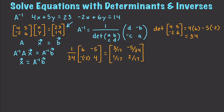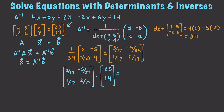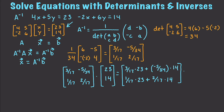We then multiply that inverse matrix times our original vector 23, 14. Working it out: 3 over 17 times 23 plus negative 5 over 34 times 14, and 1 over 17 times 23 plus 2 over 17 times 14. That gives us our final answer for X and Y of 2 and 3.